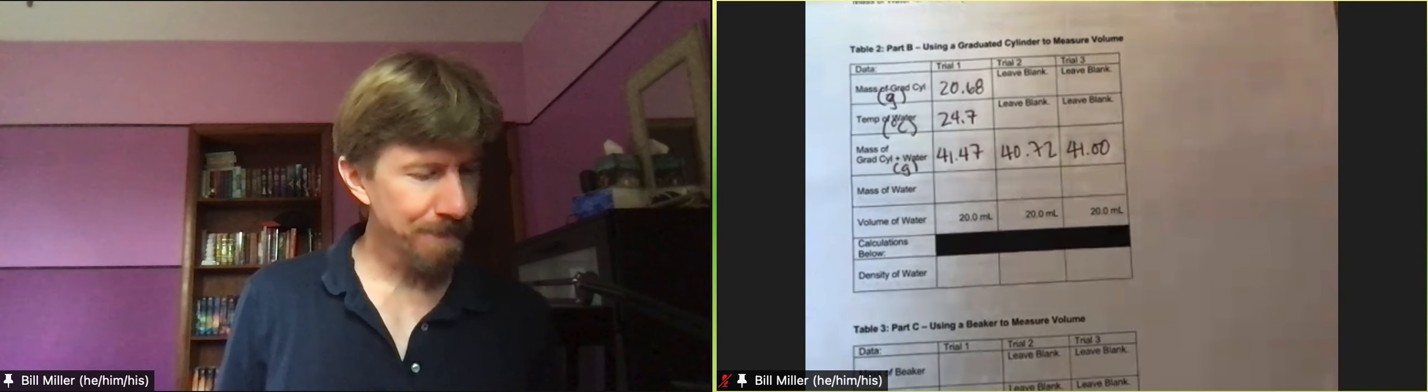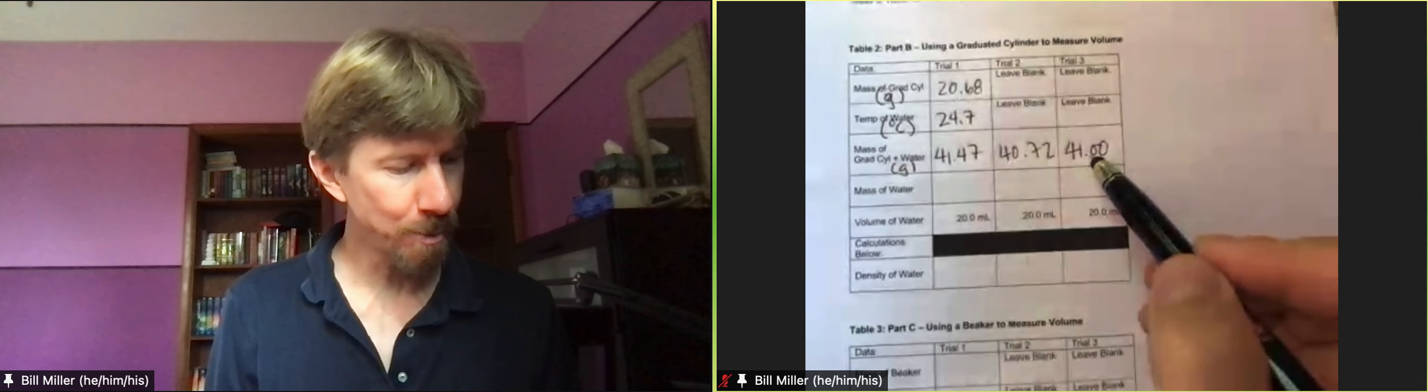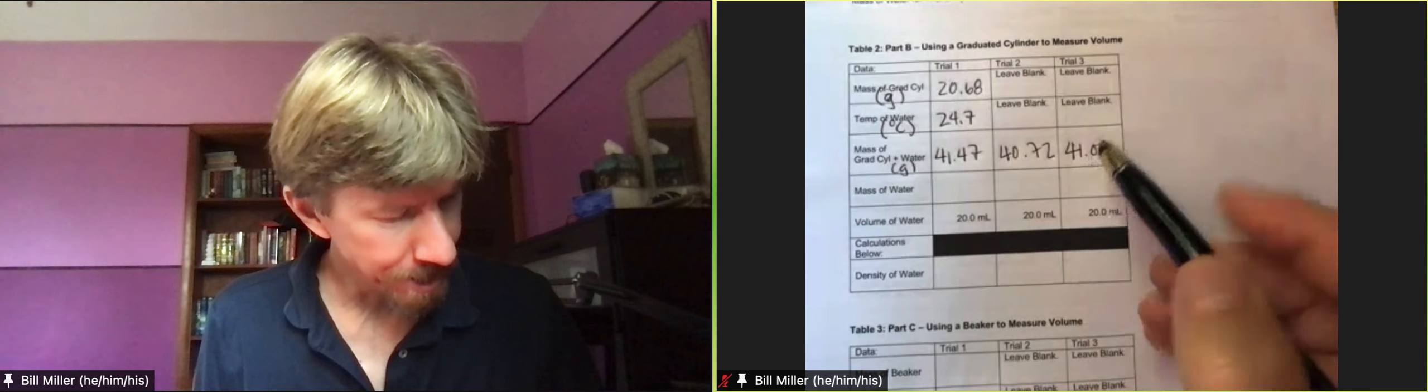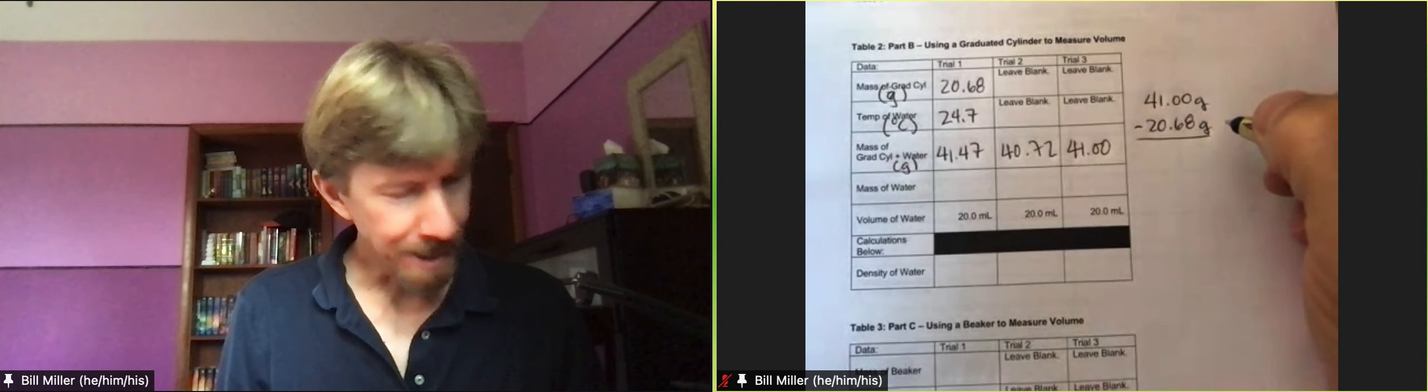That's all we need this time to fill out this table. Let's go ahead and complete table two: mass of water. This time is going to be calculated, and again because we emptied it every single time, we will always be subtracting off just the mass of the graduated cylinder. So I'm actually going to do this one with the 41. It's going to be 41.00 minus 20.68. I love units with numbers, so I'm going to write my grams down there, and I'm still going to do the math on my calculator.